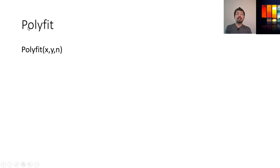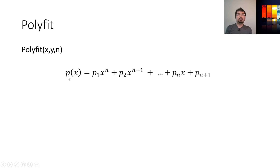The polyfit command contains three different inputs. The first one is the x-axis value, the second one is the y-axis value, and n represents the order of the equation. A polynomial function p(x) is defined as p1·x^n + p2·x^(n-1) and so on, with a constant at the end. These n values define the order of the equation, which defines the nature of the curve. A lower order n gives a line; a higher n gives a polynomial of higher degree.